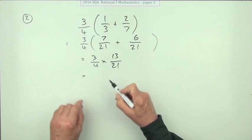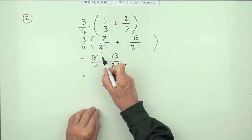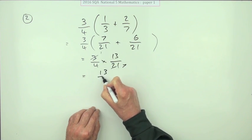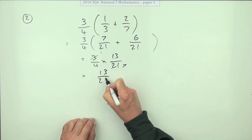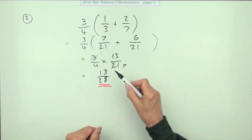If anything goes, three and 21 will go. Three into three is one, three into 21 goes seven. So I've only got one times 13 to do now, and four times seven is 28. And it's done.